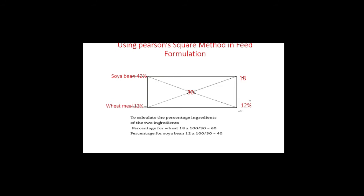After getting these two values, we calculate the percentage of each ingredient. To calculate the percentage for wheat: take 18 (the value from our subtraction), multiply by 100, then divide by 30 (the crude protein target) — this gives 60%. For soya: take 12, multiply by 100, then divide by 30 — this gives 40%. So the percentage for the energy source (wheat) is 60% and the percentage for the protein source (soya) is 40%.